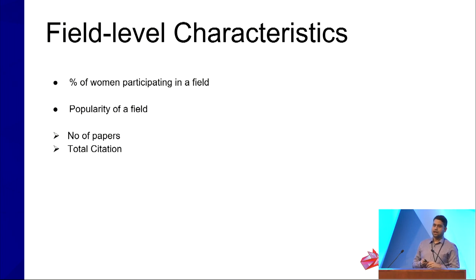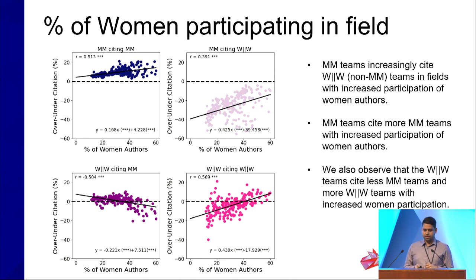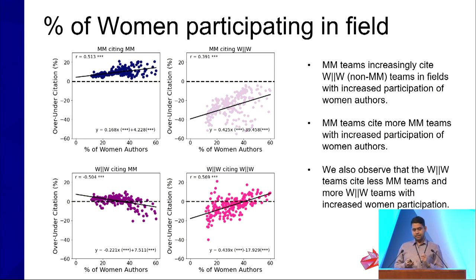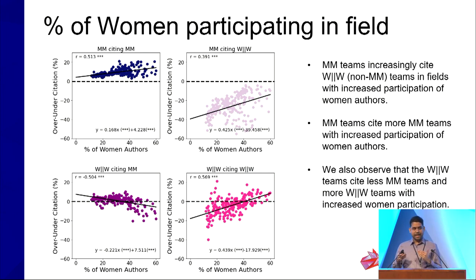We want to understand whether field-level characteristics are associated with gendered citation imbalance, looking at two characteristics: percentage of women participating in a field, and popularity of the field. With increased participation of women authors, MM teams increasingly cite non-MM teams — which is good news — but MM teams also cite more MM teams with increased women participation, which is bad news. Non-MM teams cite fewer MM teams and more non-MM teams with increased women participation, which is also good news.